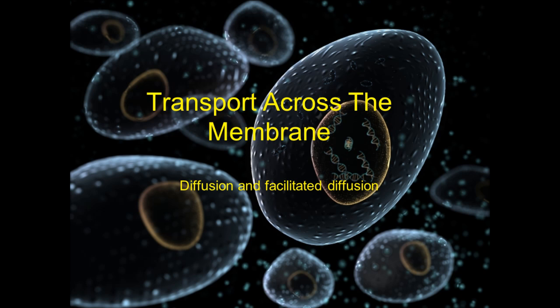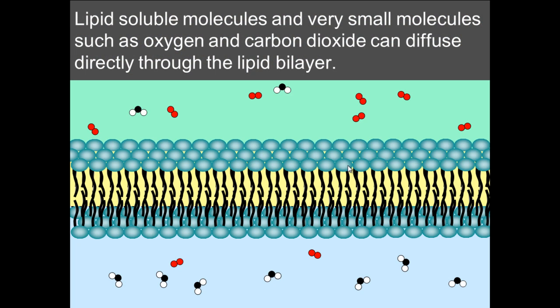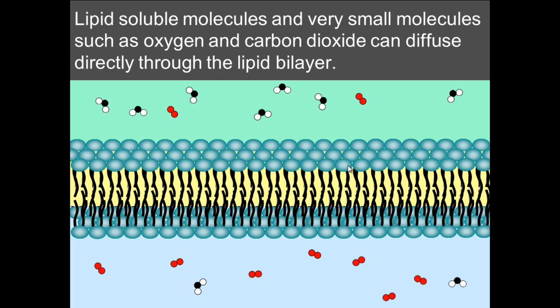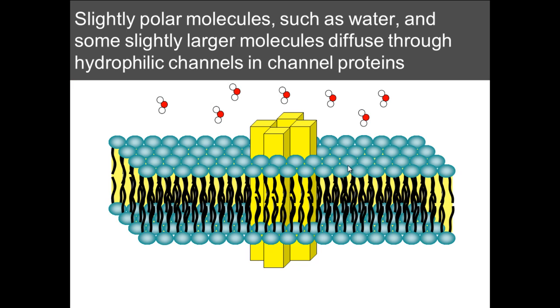Welcome to my third video in this series about membranes. Today, we are going to be looking at the passive movement of molecules. The first thing to know is that some lipid-soluble molecules and some very small molecules — things like oxygen and CO₂ — can directly diffuse through the lipid bilayer. They don't require a protein channel at all and can move freely across the membrane.